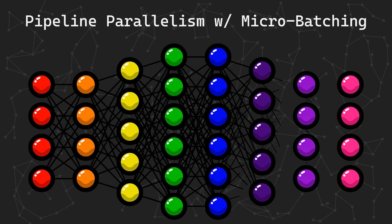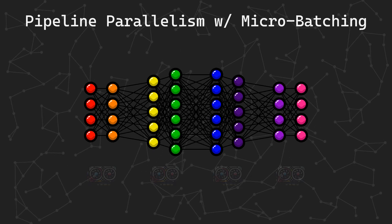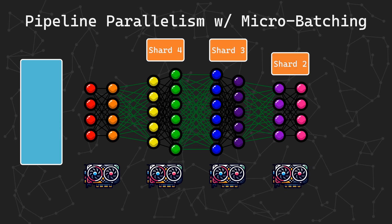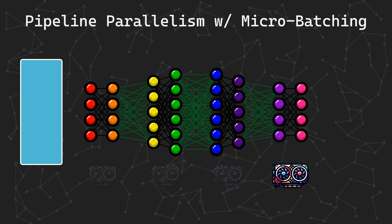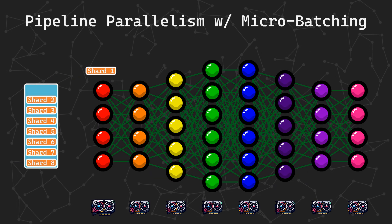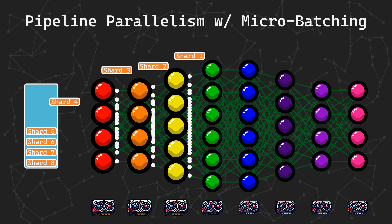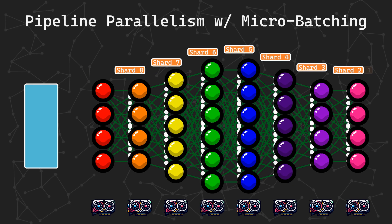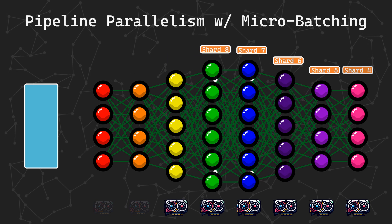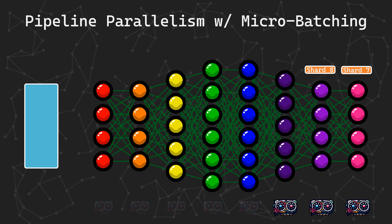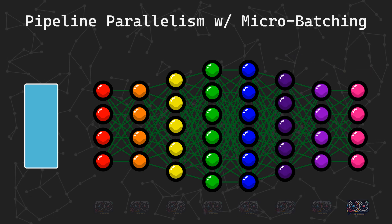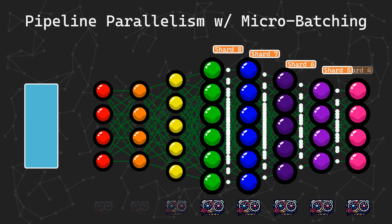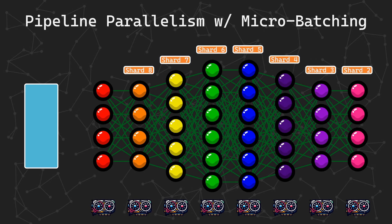That's why the GPipe paper went on to introduce micro-batching, where we split our batch into smaller chunks. We then pass each micro-batch through the model. GPU 1 processes the first micro-batch, and sends the activations to GPU 2. While GPU 2 works on the first micro-batch, GPU 1 can then begin the forward pass for the second micro-batch. Once GPU 1 and GPU 2 are done, they pass their activations forward, and GPU 1 takes in the third micro-batch, and so on and so forth. Notice at the bottom how now multiple GPUs are being used at once. Once all of the forward passes are complete and the loss has been calculated, the backward pass follows the same staggered micro-batching as the forward pass. After the gradients from all the micro-batches are accumulated, just like we talked about during data parallelism, the optimizer takes a step.